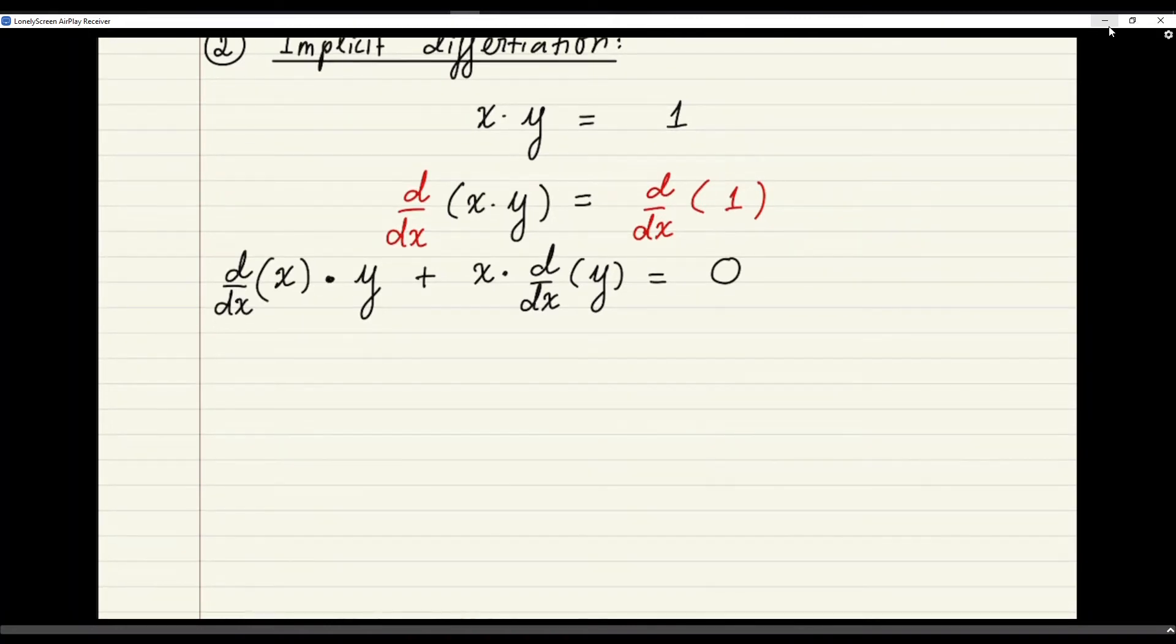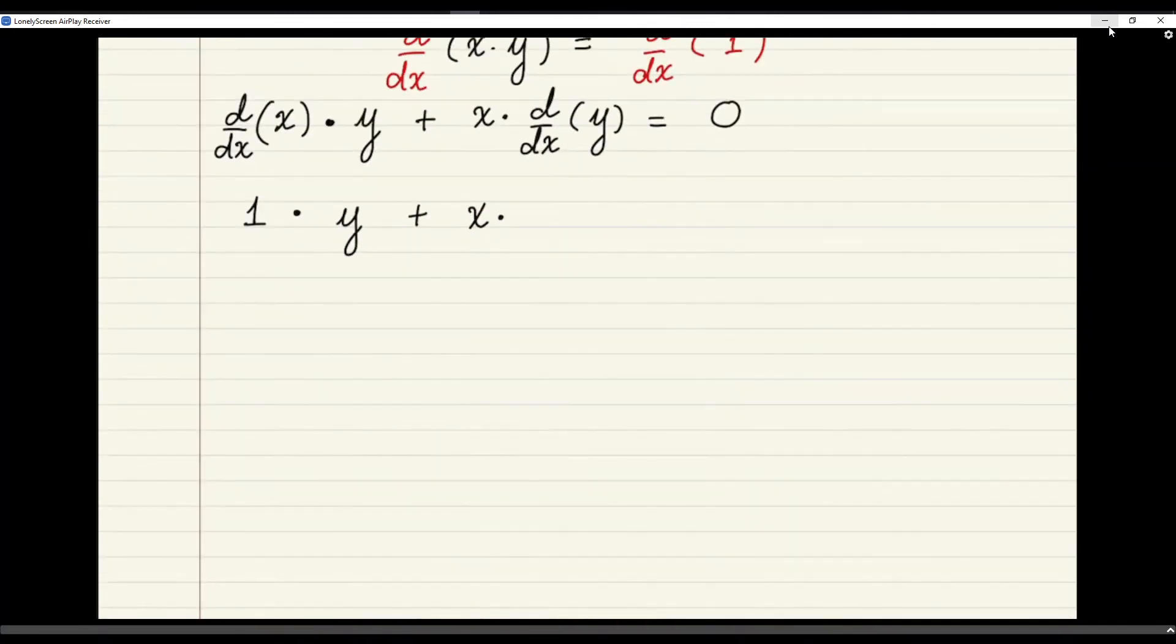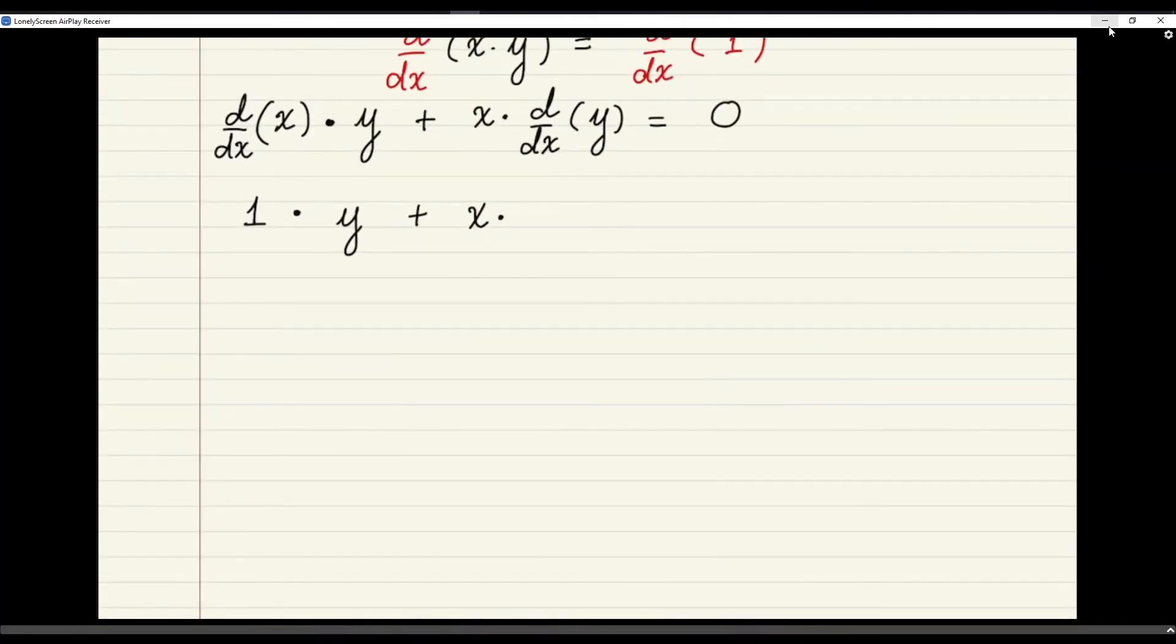So let's clean up the left hand side a little bit. Well, we have the derivative of x with respect to x itself. So that would be 1. Multiply by y. Plus x times... Oh well, here we have d dx of y, which is the thing that we are looking for. I can shorten that by just writing this as y prime.